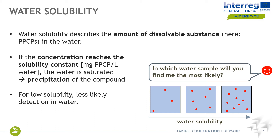The first property we investigate is water solubility. Water solubility describes the amount of dissolvable substance — in our case the PPCP — in water. If the concentration reaches the solubility constant, expressed as milligrams of PPCP per liter of water, the water is then saturated. This is a very unlikely situation for PPCPs, which are generally encountered in nature at very low concentrations, in the range of nanograms per liter or micrograms per liter. However, when solubility is reached, precipitation of the compound in the water solution can be observed. Therefore, for low solubility compounds, there is a lower likelihood of being detected in water.